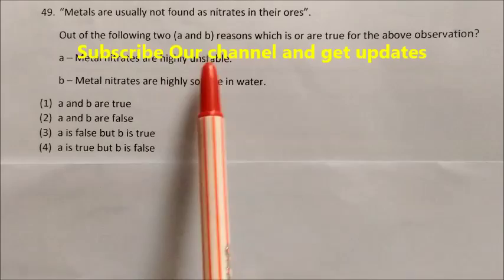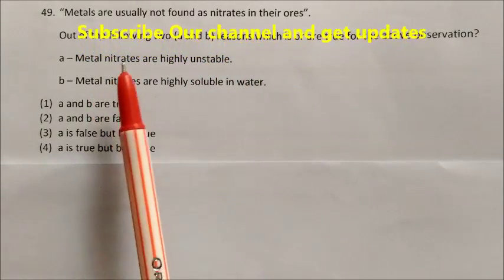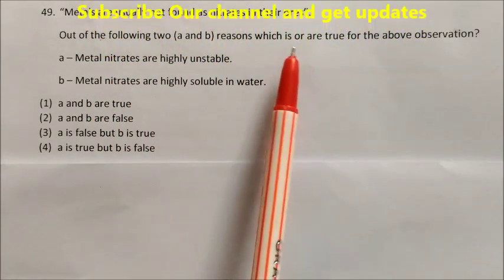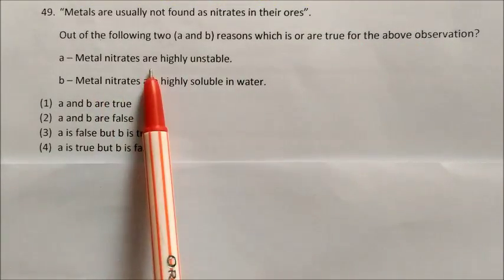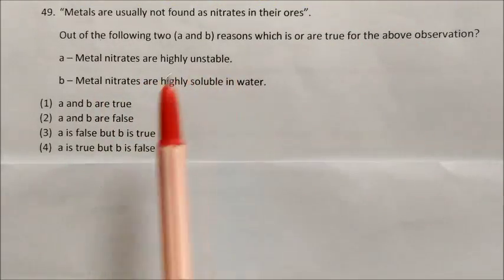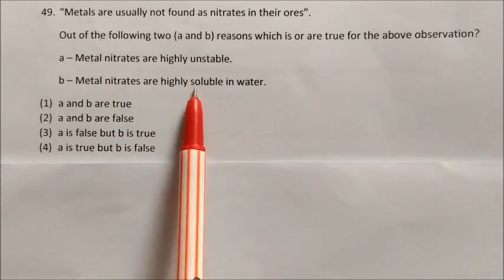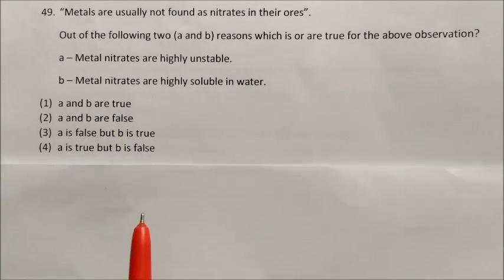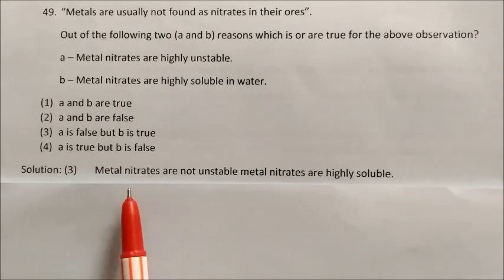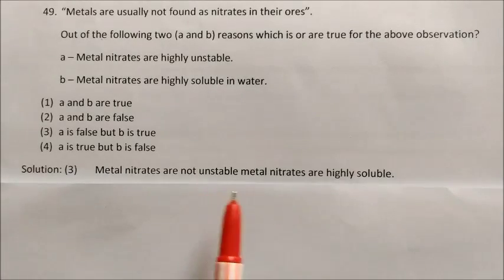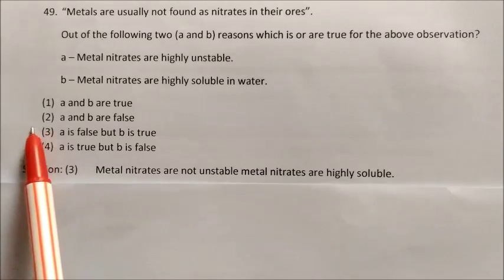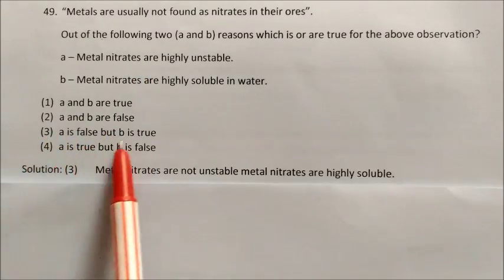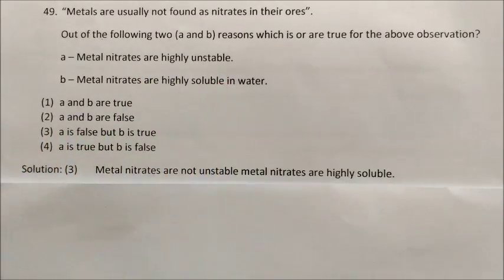Question: Metals are usually not found as nitrates in their ores. Which of reasons A and B are true? Reason A: metal nitrates are highly unstable. Reason B: metal nitrates are highly soluble in water. Metal nitrates are not unstable — that is false. Metal nitrates are highly soluble in water — that is true. So A is false and B is true. Answer is option 3.